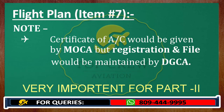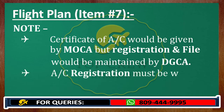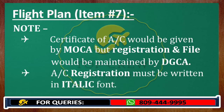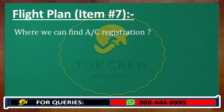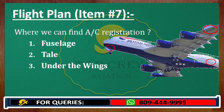This is a question for your Part 2 exam. Also, aircraft registration must be written in italic font — another exam question. Where can we find aircraft registration? Number 1: on the fuselage. Number 2: on the tail. Number 3: under the wings. Number 4: inside the cockpit. Do remember, this is very important.